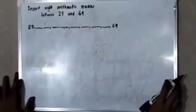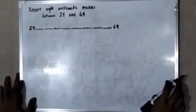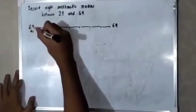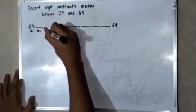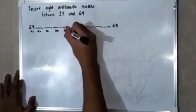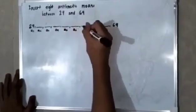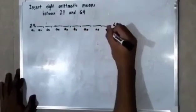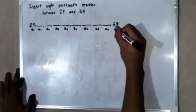Insert eight arithmetic means between 24 and 69. This is a sub 1, a sub 2, a sub 3, a sub 4, a sub 5, a sub 6, a sub 7, a sub 8, a sub 9, and a sub 10.